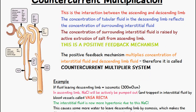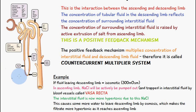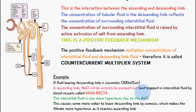To give an example: if the fluid leaving the descending limb is isoosmotic — 300 milliosmols — in the ascending limb sodium chloride is going to get actively pumped out and trapped in the interstitial fluid by blood vessels called vasa recta. The interstitial fluid is now going to be more hypertonic due to this sodium chloride, which causes water to leave the descending limb by osmosis, making the filtrate more hypertonic as it reaches the ascending limb. This process continues until maximum concentration in the inner medulla is reached.